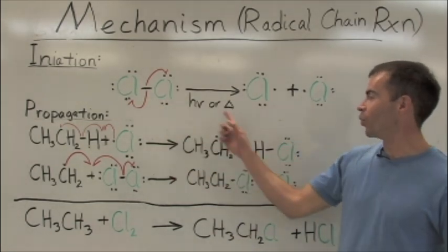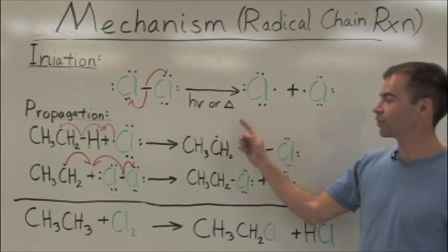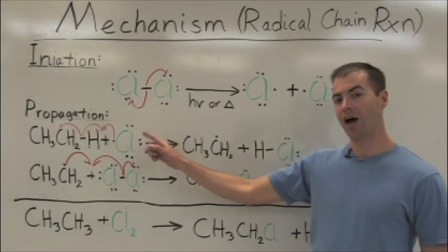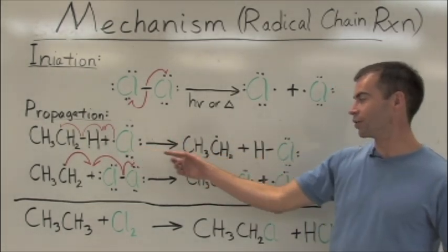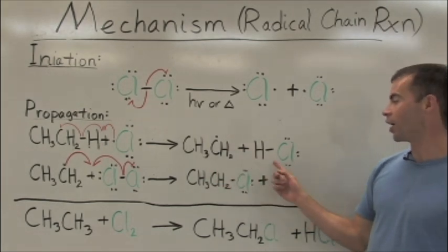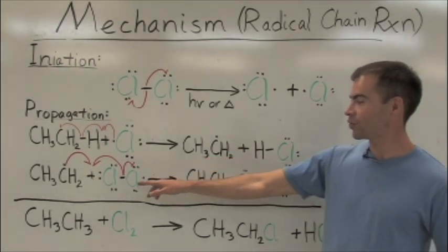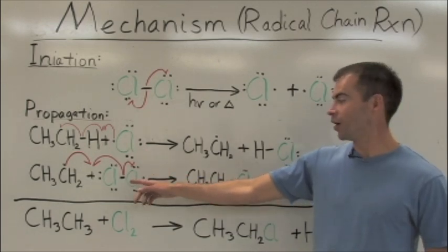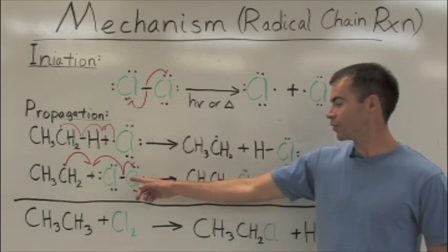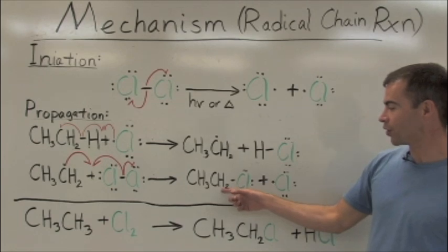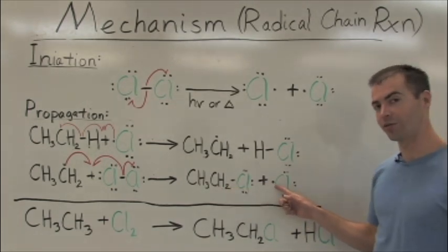In propagation, one of these chlorine radical atoms strikes the hydrogen atom off the ethane to give the ethyl radical and hydrogen chloride. This ethyl radical, in turn, strikes a chlorine atom off a chlorine molecule to yield ethyl chloride and regenerate a chlorine radical atom.